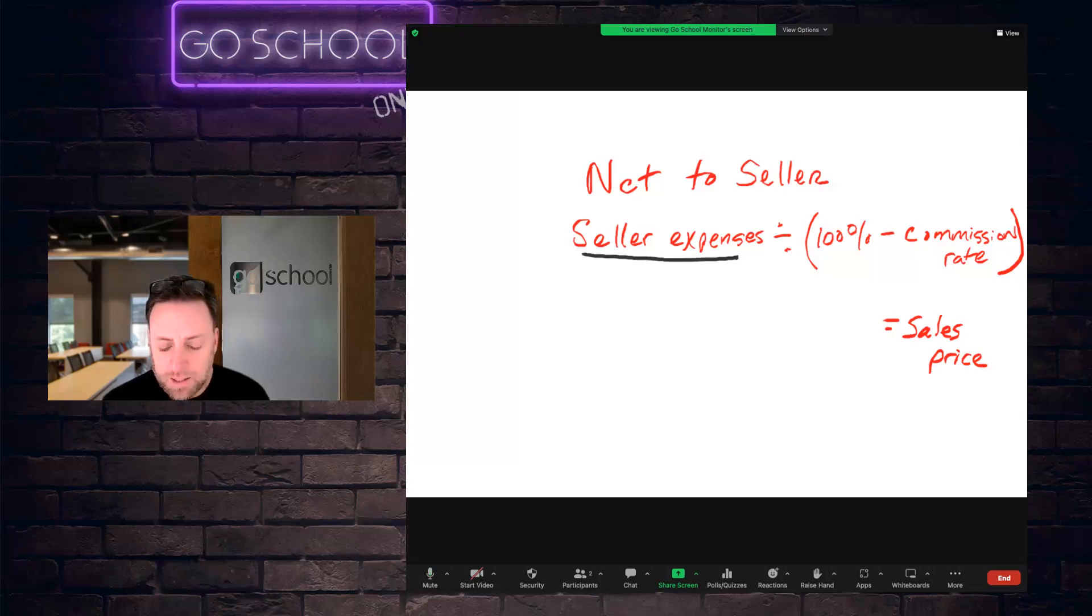So we need to determine what our seller expenses are in order to calculate this problem. Our expenses are the mortgage at $21,275. And then because this seller wants to net $50,000 from the sale of this house, we're going to have to consider that as an expense too. So these are the only two numbers given to us in the problem. We'll add those up and consider these the seller expenses. When I do that, I come up with $71,275.